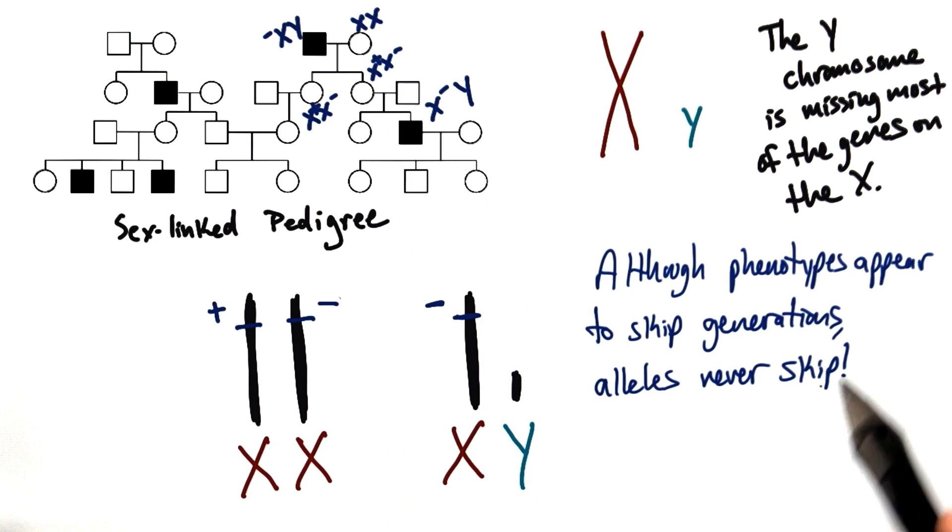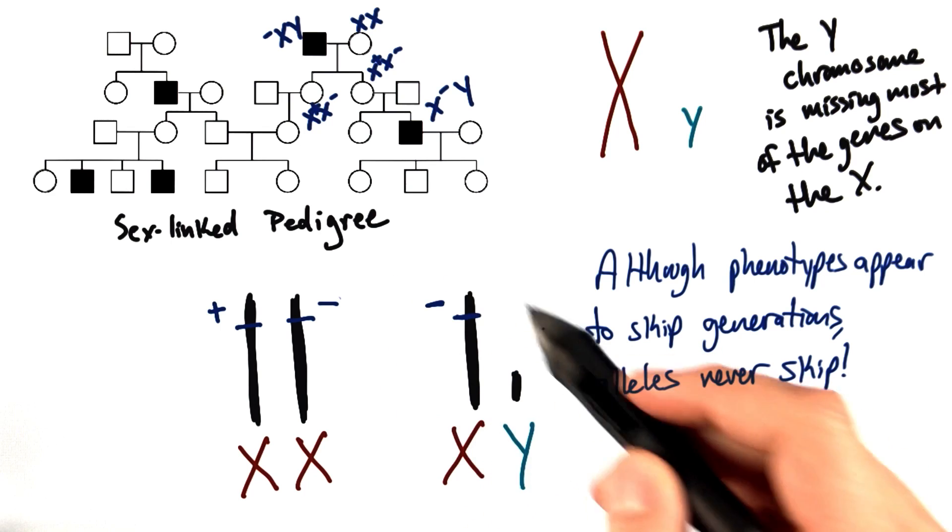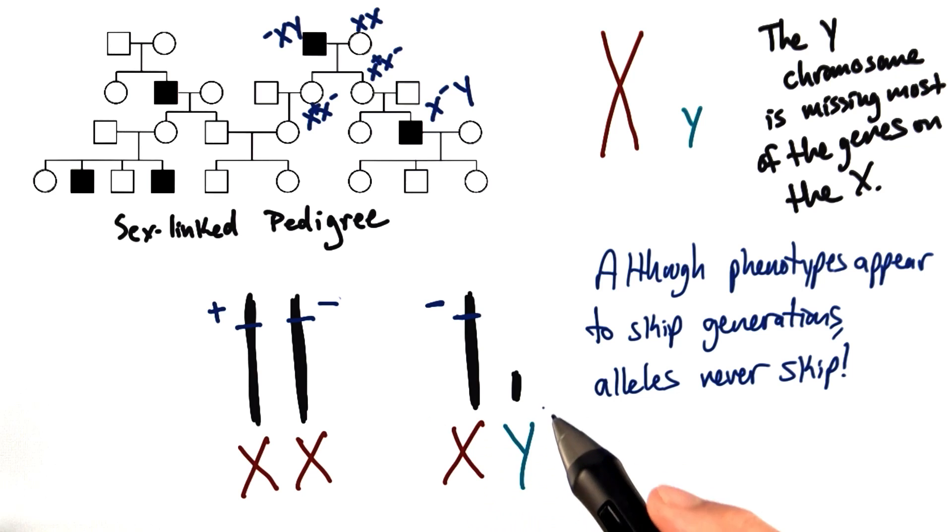So the lesson from all of this is that although phenotypes appear to skip generations sometimes, the alleles never skip. And in the case of sex-linked traits, when they're linked to either the X or the Y chromosome, because there are some traits linked only to the Y chromosome, the patterns can be a little bit more tricky to discern because the males don't have another copy to complement their X chromosome.